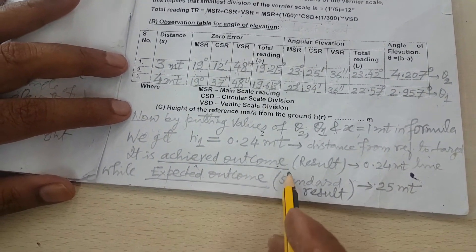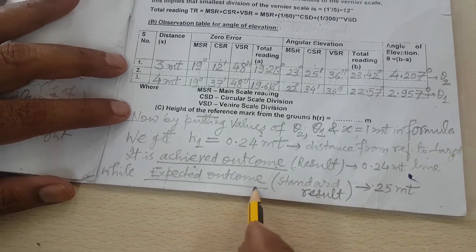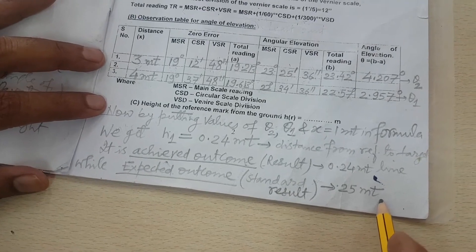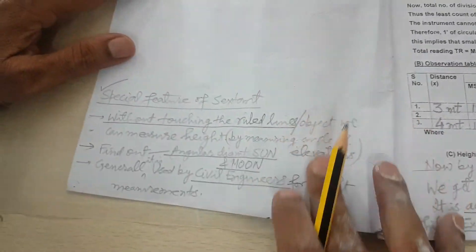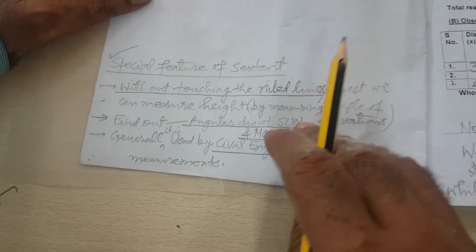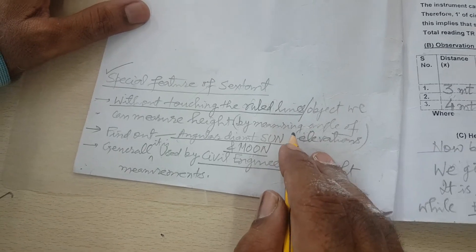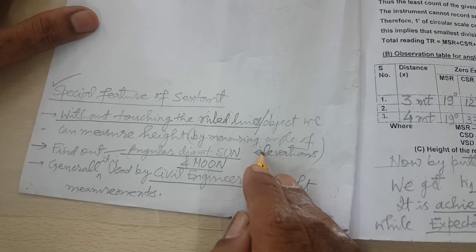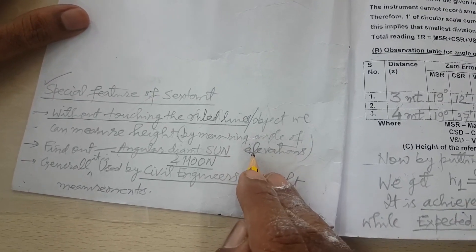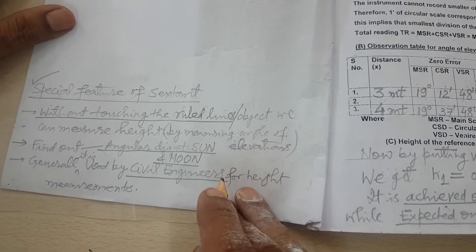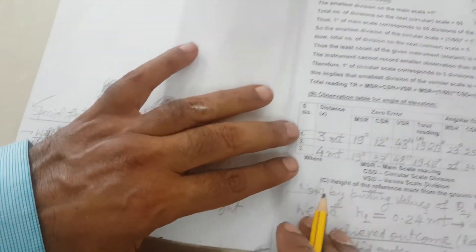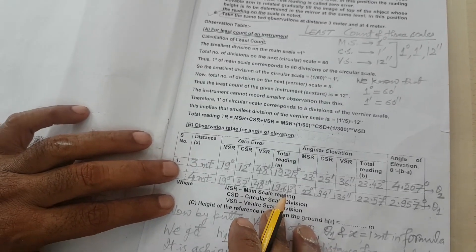This is the achieved outcome, and the expected outcome — the standard value — is 0.25 meters. The special feature of the sextant is that without touching the road lines, we can measure the height by measuring the angle of elevations. We can also find out the angular diameter of the sun and the angular diameter of the moon. This experiment is generally used by civil engineers for height measurements. Thank you, have a nice day.